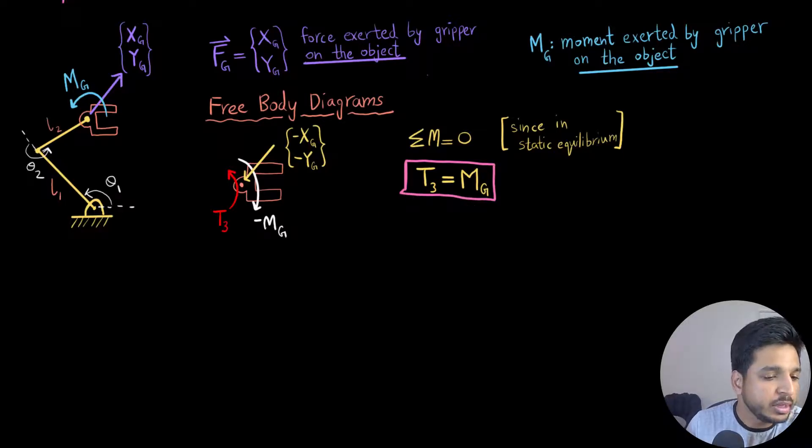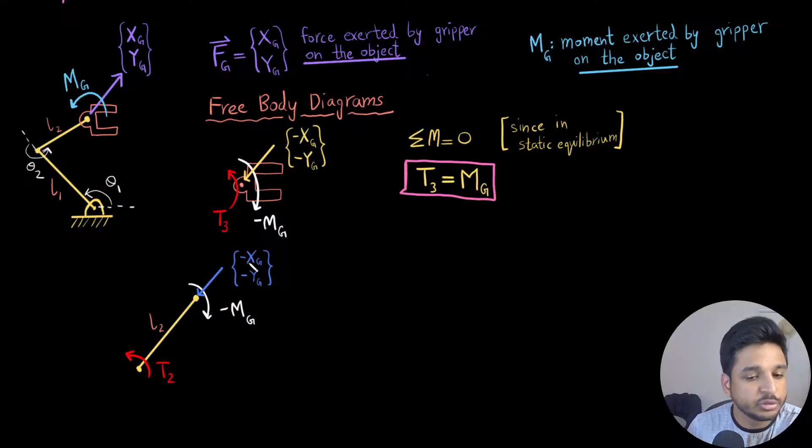Now similarly, here I have drawn the second link, which is A2. I have again marked the forces and the torques being exerted on the link and T2 represents the moment exerted by the motor, the second motor, which is right here.